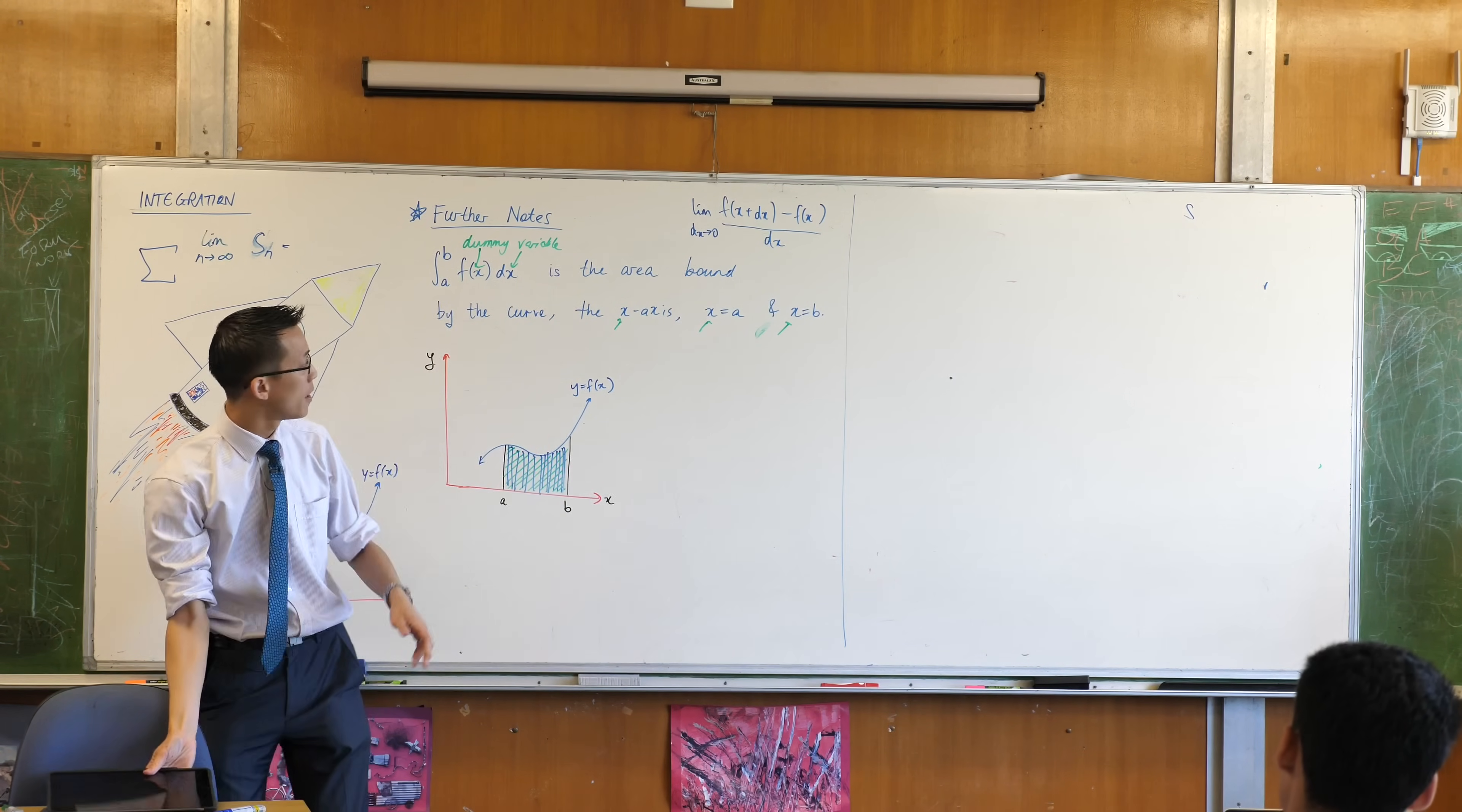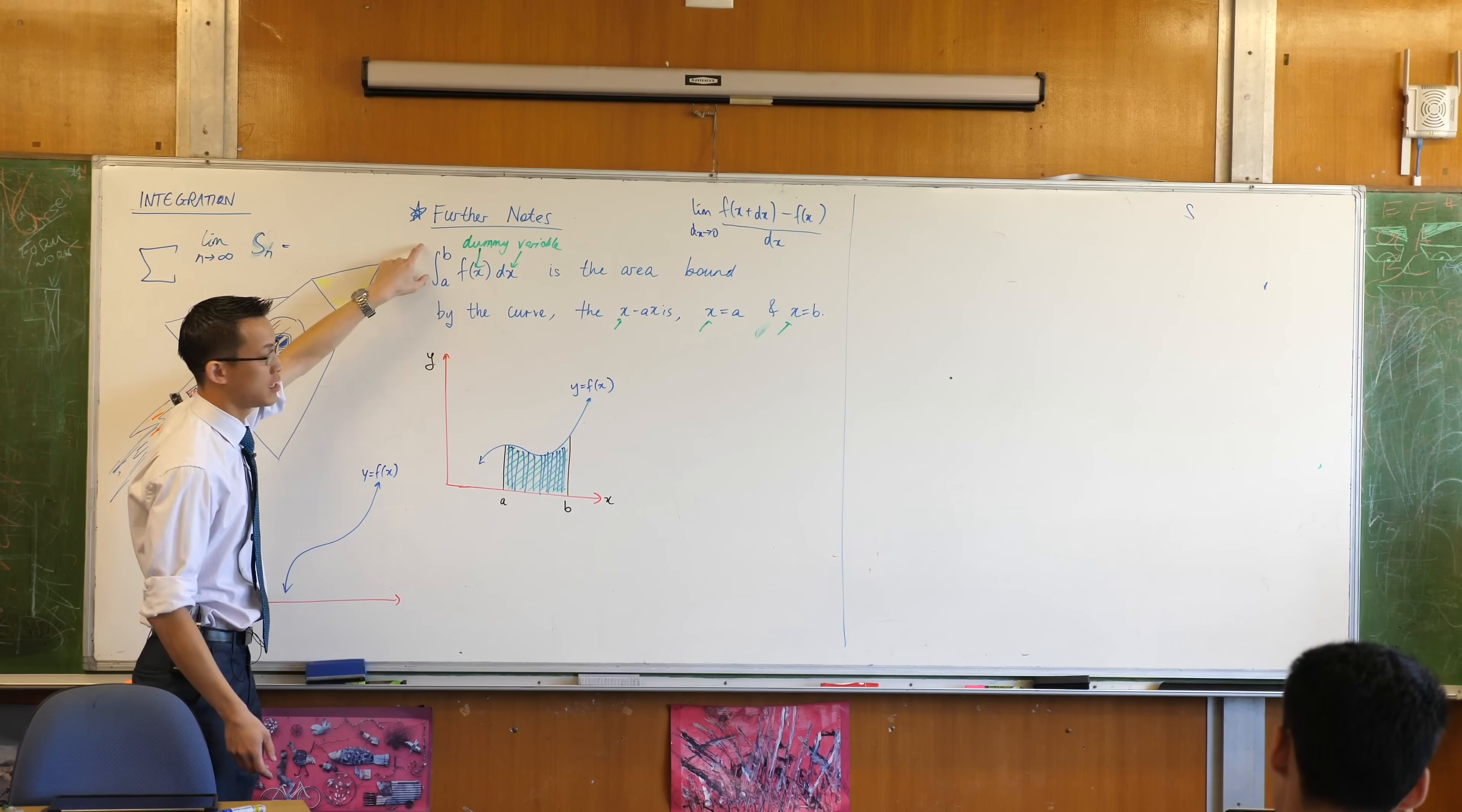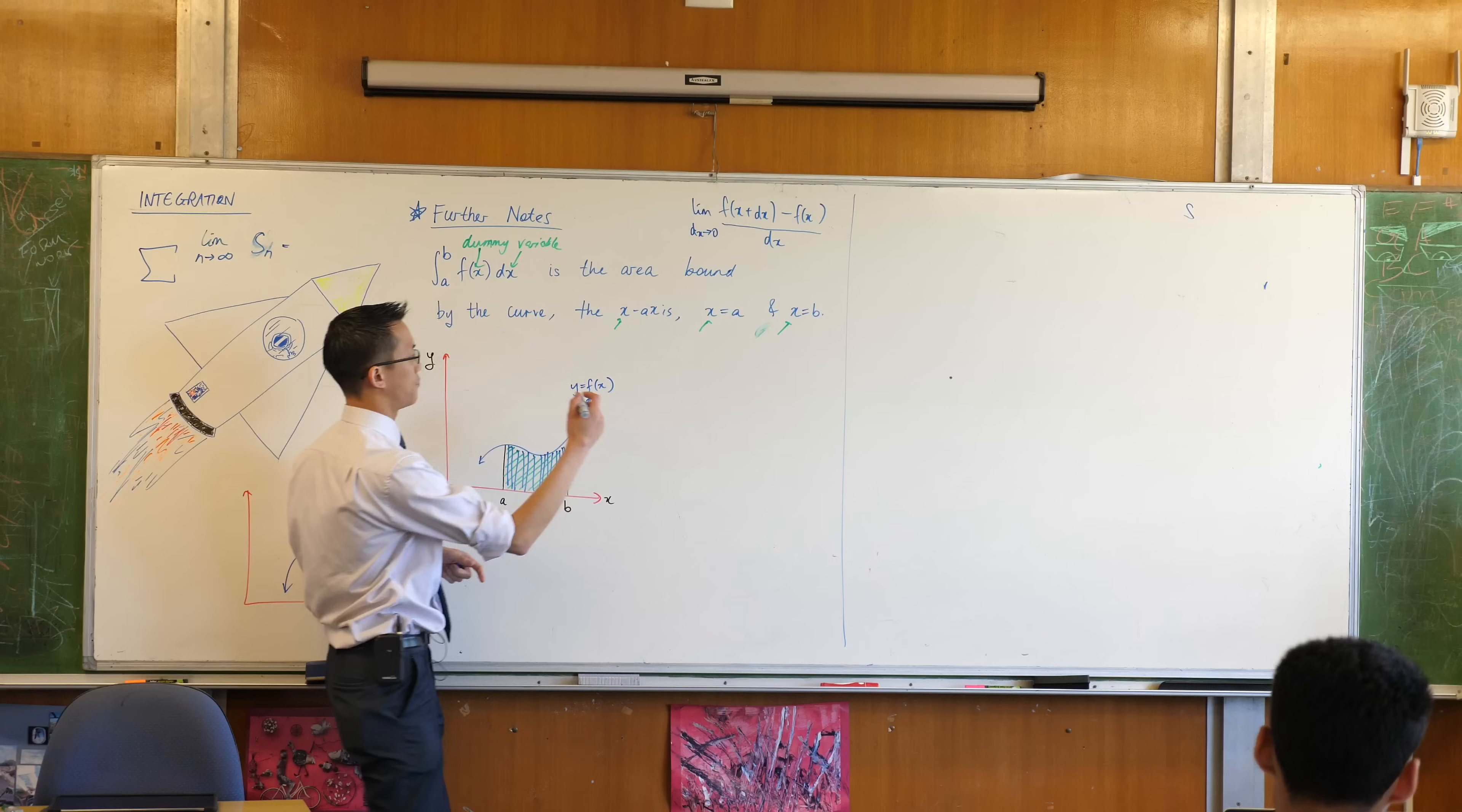Go back to your earlier examples. Do you remember? The first line you would have would have this in it, and then immediately on the next line, all the x's are gone because they've been replaced by numbers. You evaluated the definite integral.